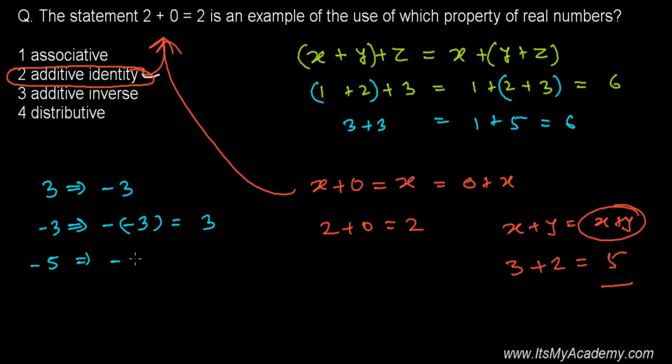Similarly, if I have -5, then the additive inverse of -5 will be minus of whatever the number is, and minus minus is plus 5. And distributive law is somehow like this: you're distributing. See, it's x times (y + z).